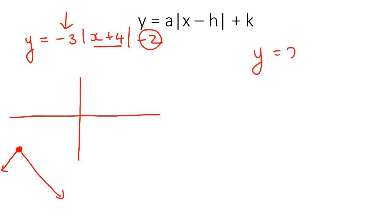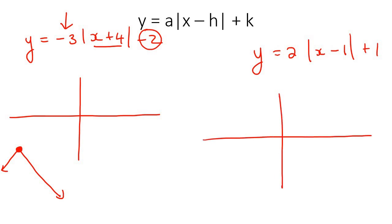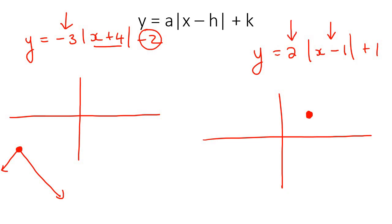Let's do another example: y equals 2 times the absolute value of x minus 1, plus 1. So the vertex normally starts at 0. That x minus 1 part: minus means right, so 1 to the right. Then 1 up. So there's the vertex. The number in front is positive, so it's going to be a normal upward V. I'll show you a few more little tricks that your teachers may have shown you as well.